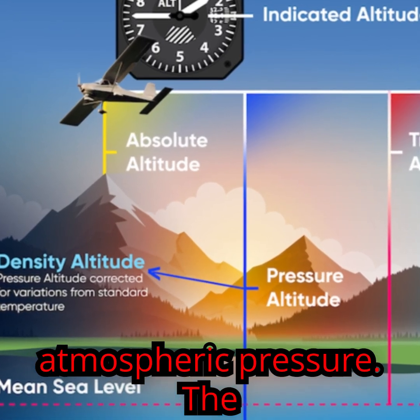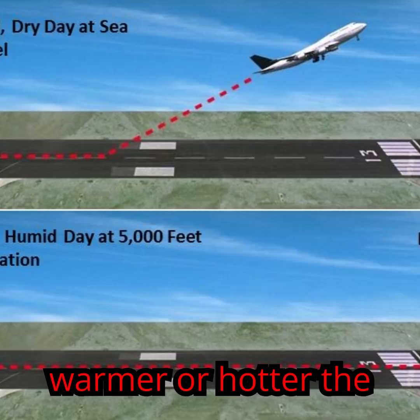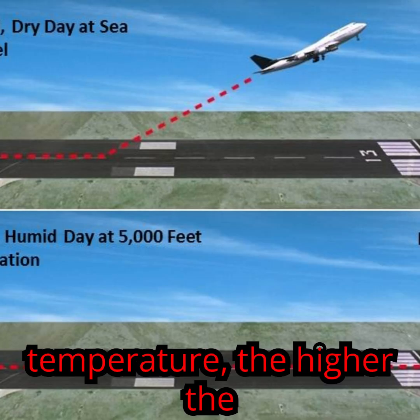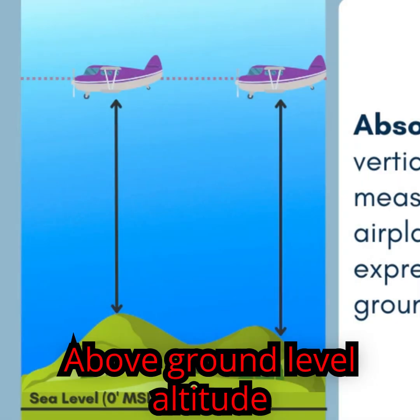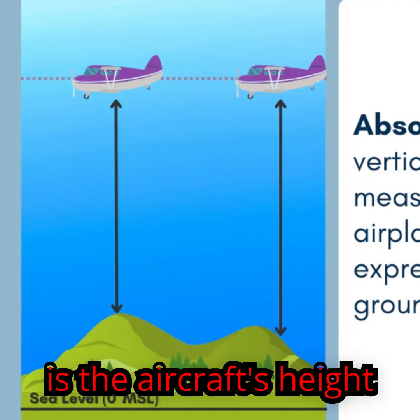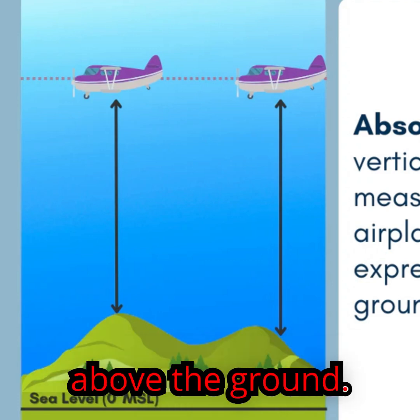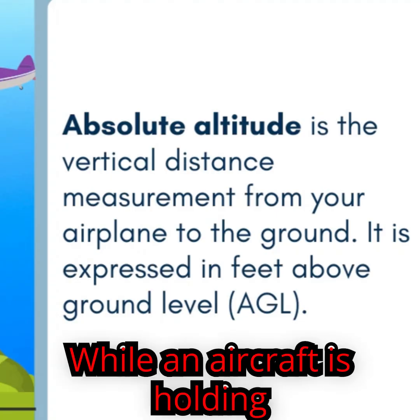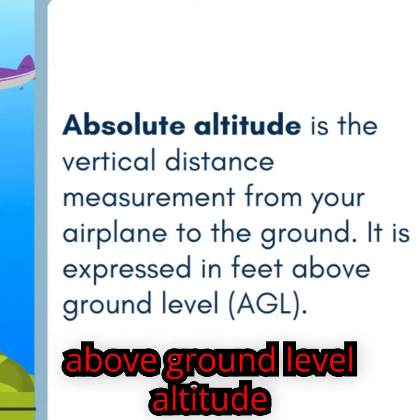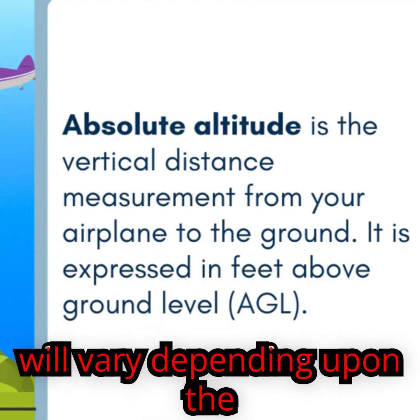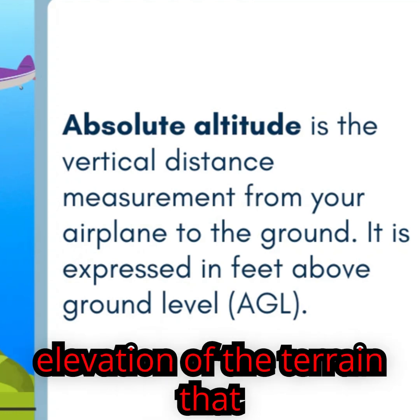Density altitude is the MSL altitude corrected for temperature and atmospheric pressure. The warmer or hotter the temperature, the higher the density altitude. Above ground level altitude is the aircraft's height above the ground.